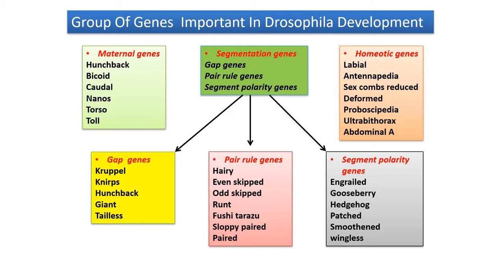In case of maternal genes, there are basically six representative genes: hunchback, bicoid, caudal, nanos, torso, and tall. In case of homeotic genes, representative genes are labial, antennapedia, sex combs reduced, deformed, proboscipedia, ultrabithorax, and abdominal A.